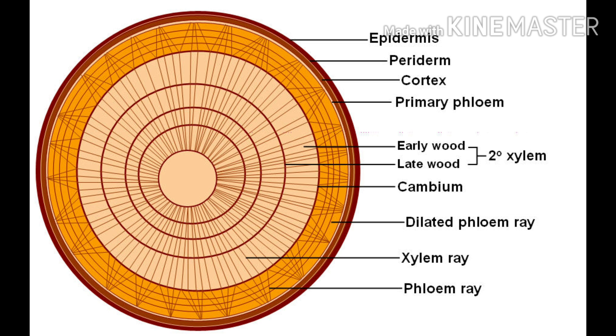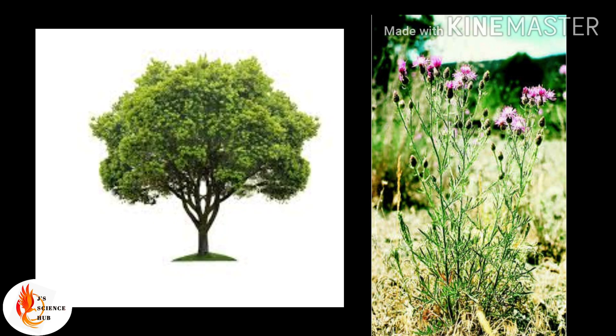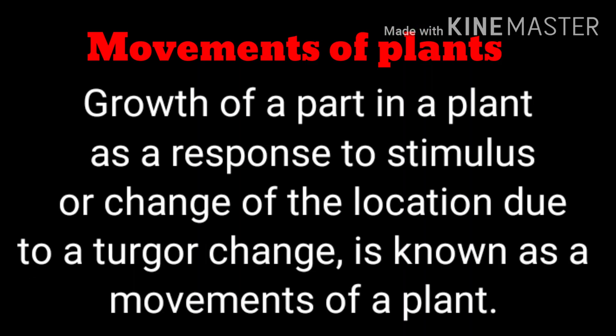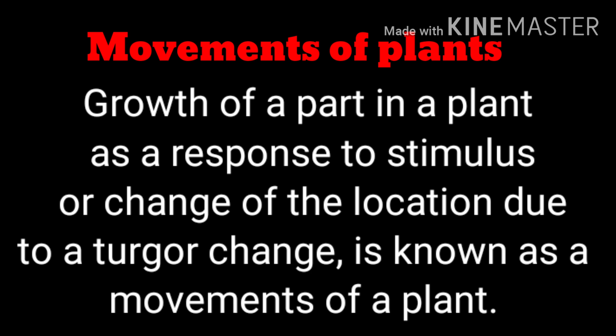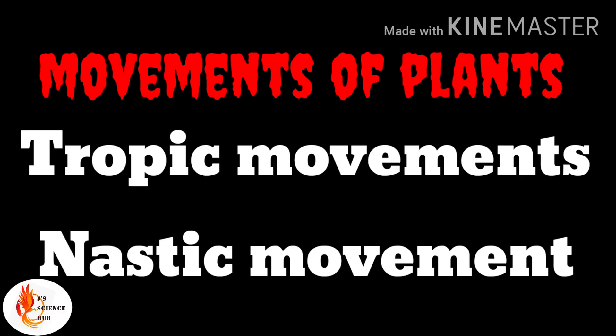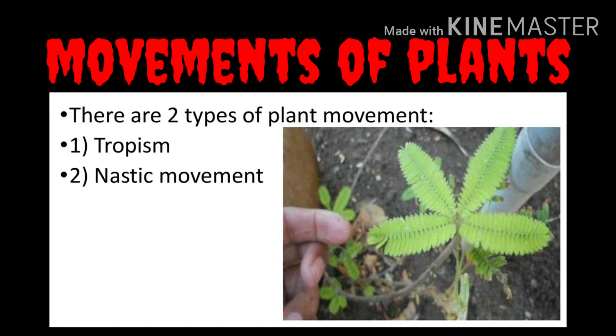Mainly dicot plants show secondary growth, which gives more strength and mechanical support to the woody plant. Now let's discuss about the movements of plants. Growth of a part in a plant as a response to a stimulus, or change of location due to a turgor change, is known as movement of plants. There are two different types: tropic movement and nastic movement.